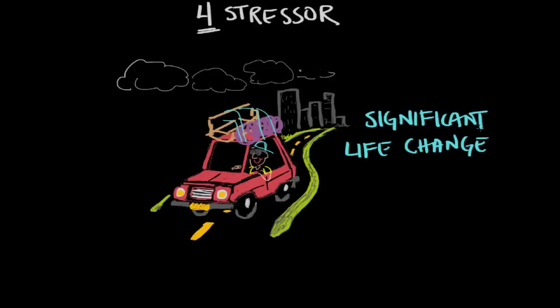Significant life changes describe major personal life changes such as the death of a loved one, the loss of a job, leaving home for the first time, marriage, divorce, or having children. If you're interested, you can look at the Holmes and Rahe stress scale, which considers the effect of 43 different major life stressors and offers a hypothesis about your relative risk for stress-related illness.